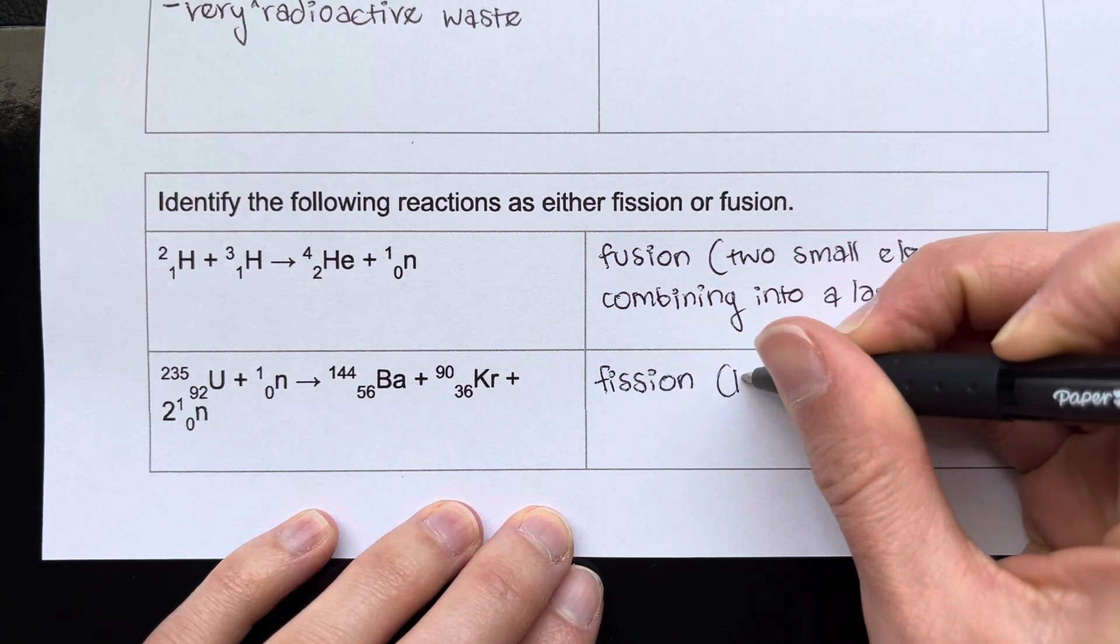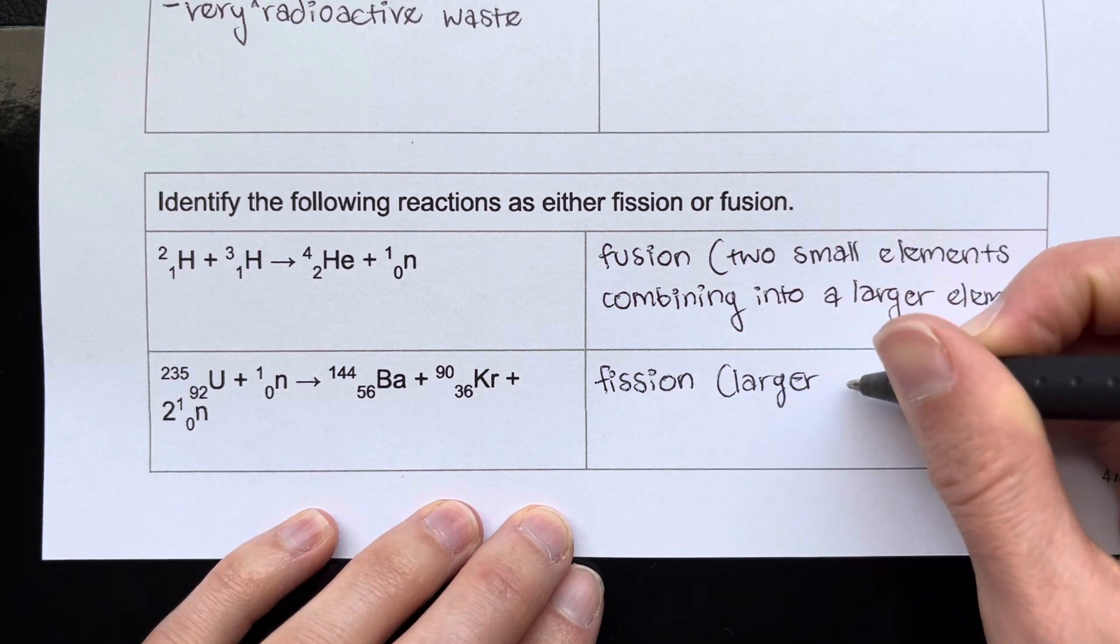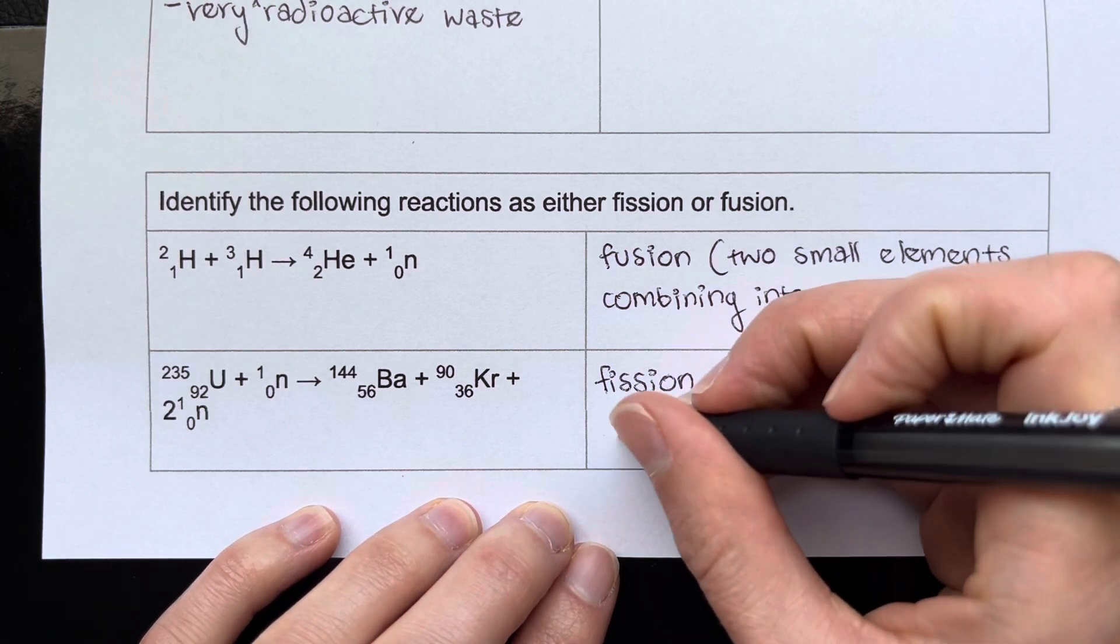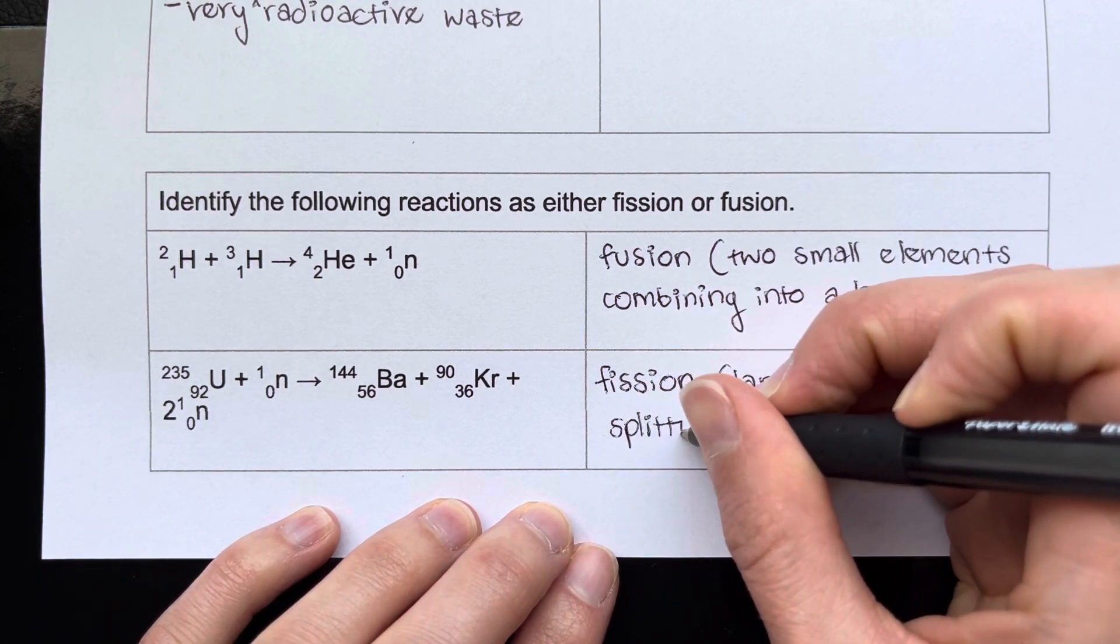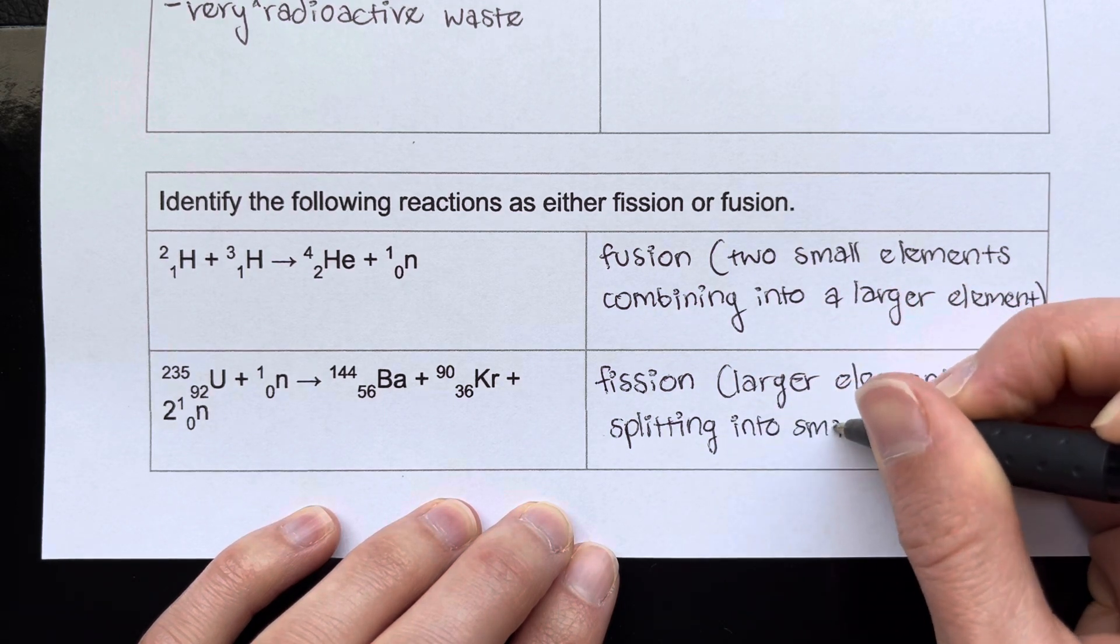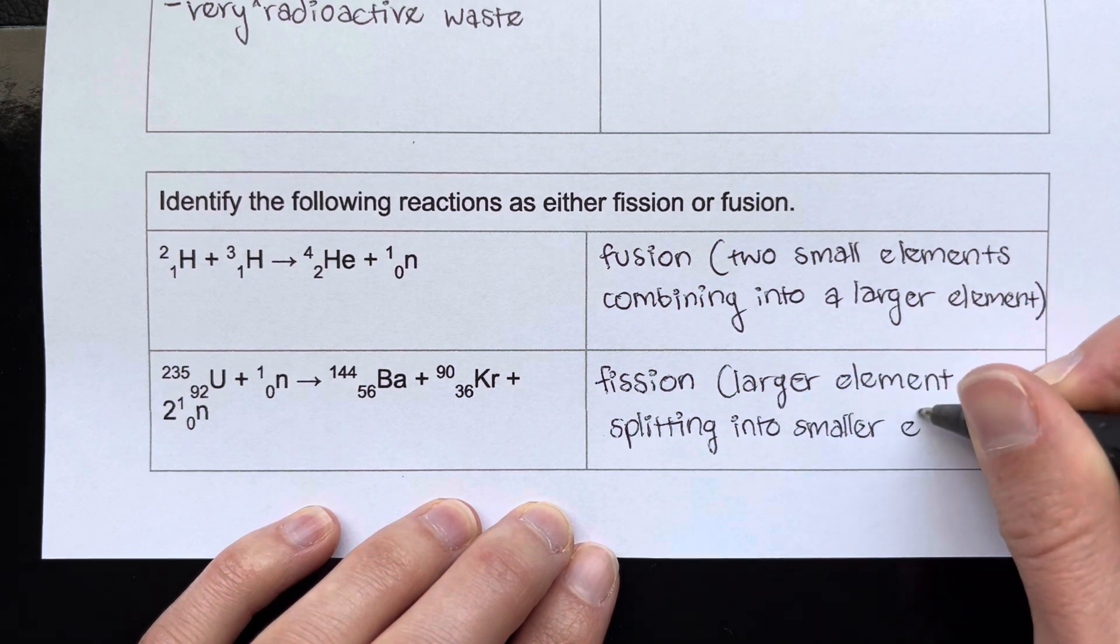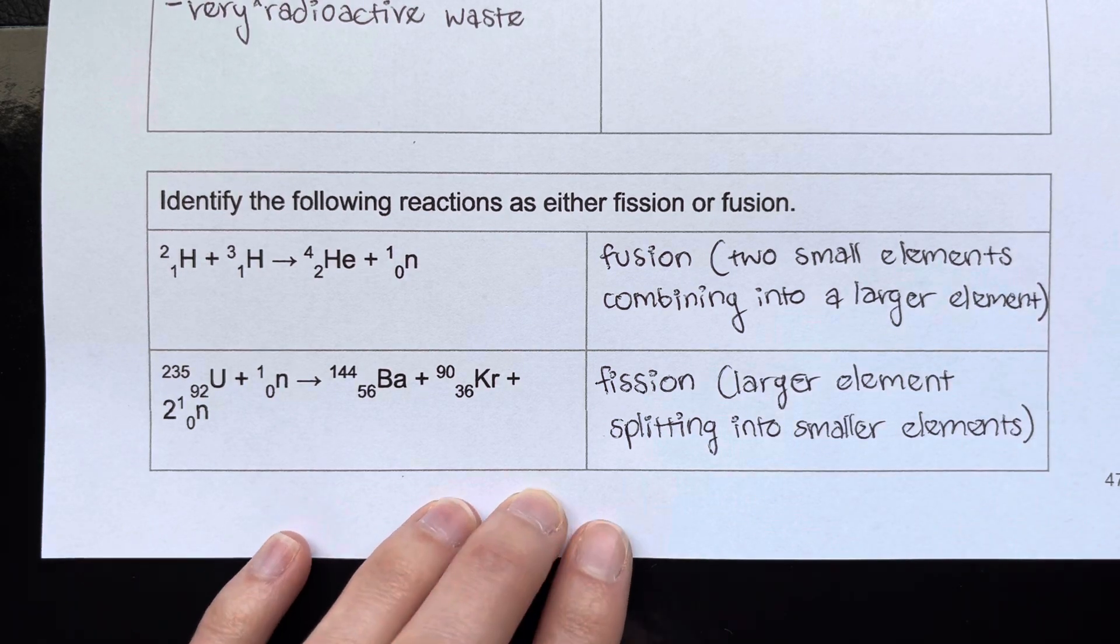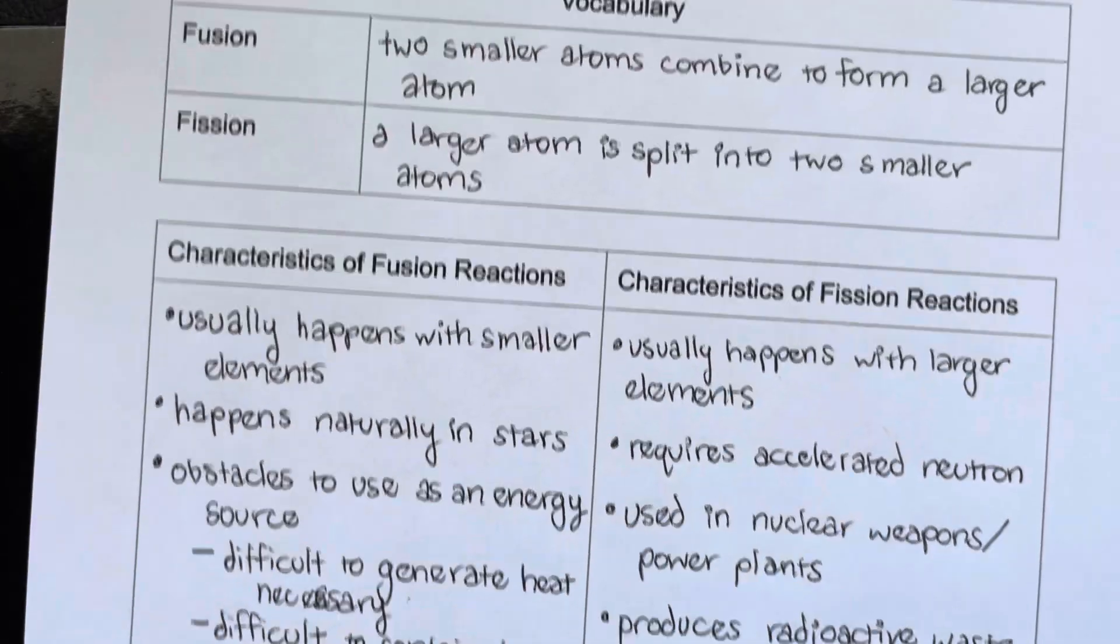We have a larger element splitting into smaller elements. All right. And those are the differences between fission and fusion. That's everything.